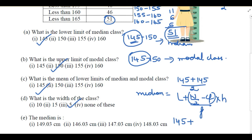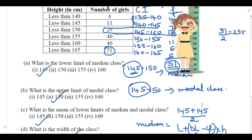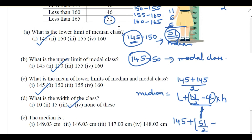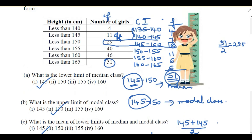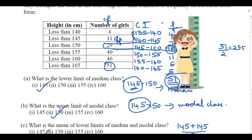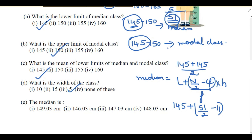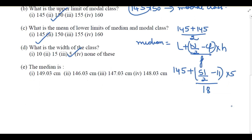Substituting the values: L (lower limit of median class) = 145, N = 51 so N/2 = 25.5, cf (cumulative frequency above the median class) = 11, f (frequency of the median class) = 18, and h (class size) = 5.